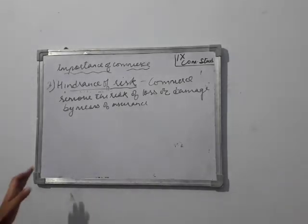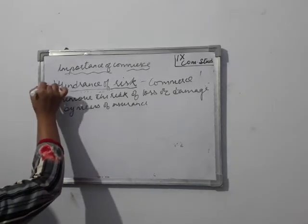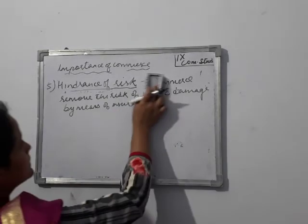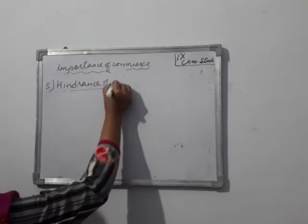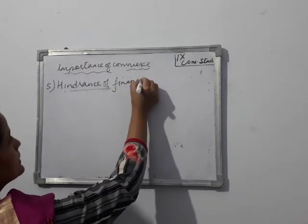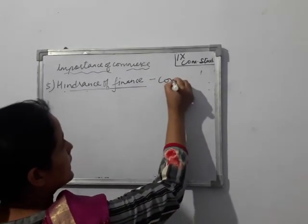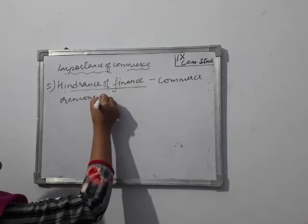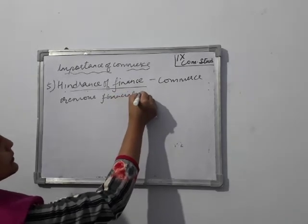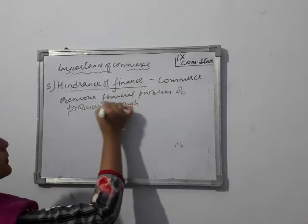The fifth importance is hindrance of finance. Hindrance of finance means the financial problems of producers are solved through banking. Banking is the part of commerce that addresses the financial problems of producers.